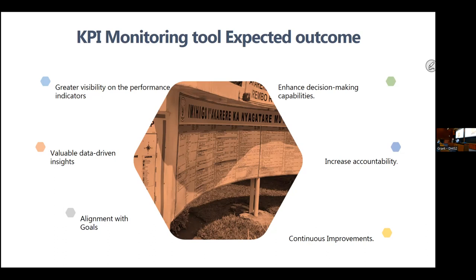The expected outcomes include greater visibility of what is happening at the ground level — currently done through WhatsApp, email, or manual papers, making it difficult to aggregate. It will enhance decision-making capabilities at all levels and increase accountability. The main reason for implementing this tool is not only accountability but also continuous improvement — seeing that we committed to reaching a target after three months but in one month we can see we won't meet it. Indicators are aligned to SDGs, national commitments, and other goals.